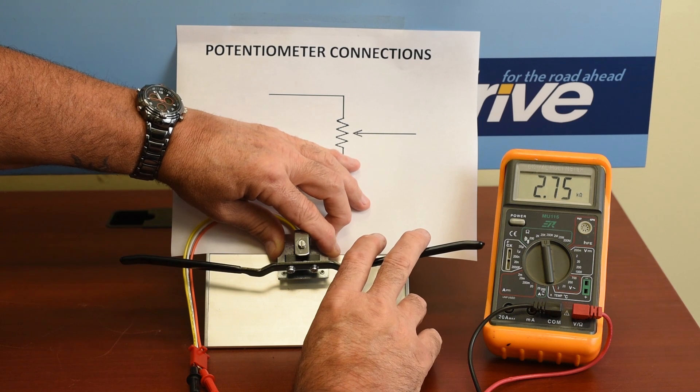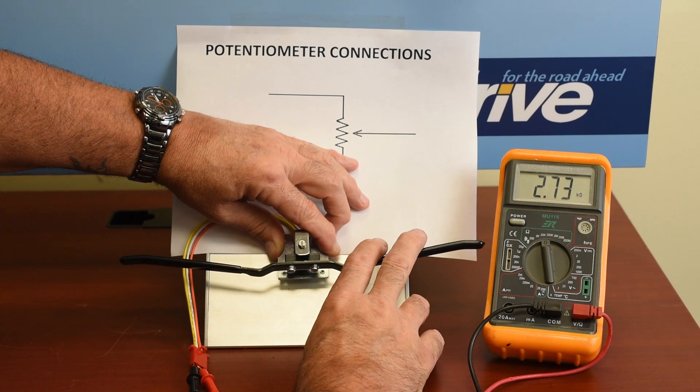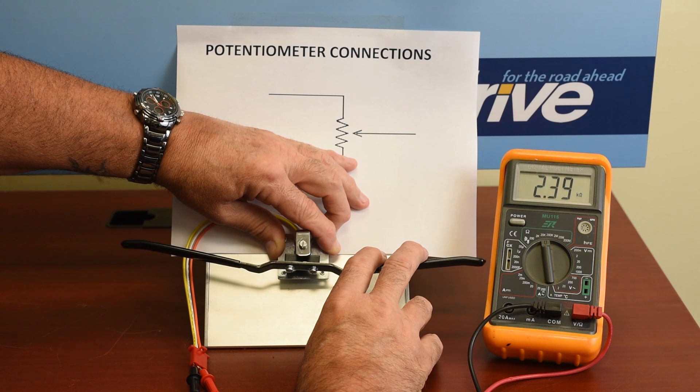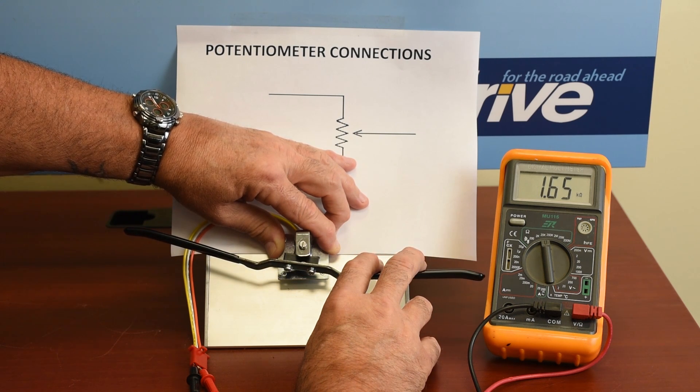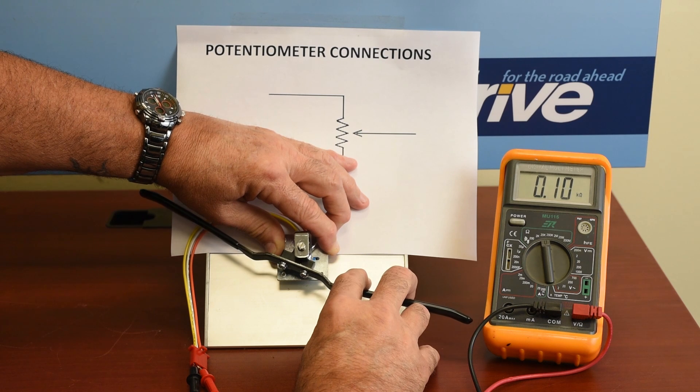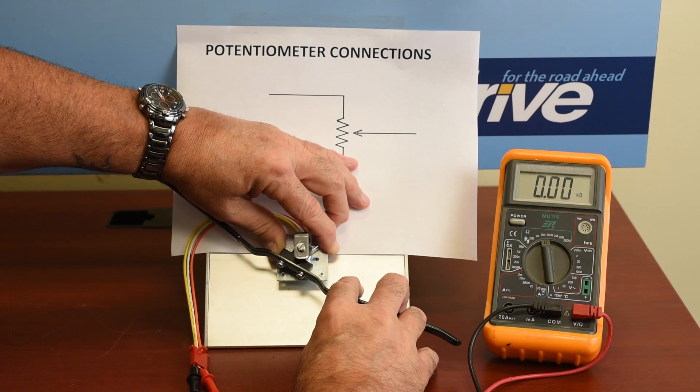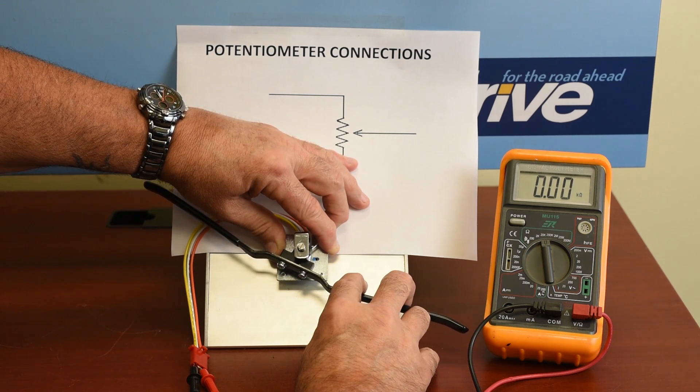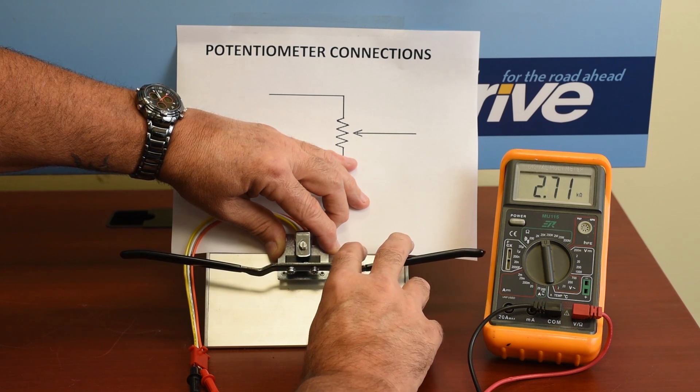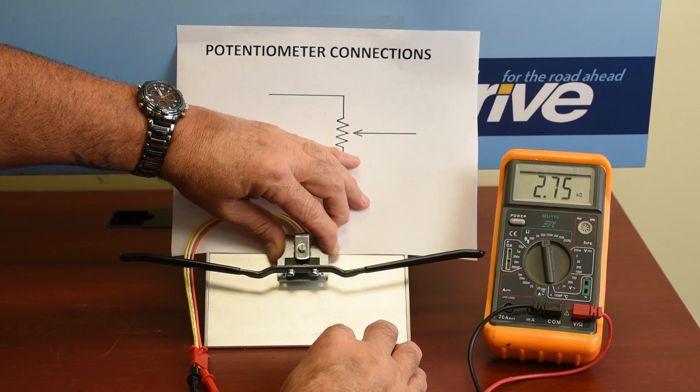Now we swing the other way, and it should go to zero very slowly. It'll decrease very slowly with no dead spots. And as we get through our full range, it goes to zero. And we go back to where we started.